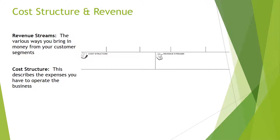At the bottom of the business model canvas you have the cost structure and revenue streams. This section highlights how you make money and the costs associated with operating the business. For a farm, revenue streams can include selling kale direct at a farmers market, selling wholesale to restaurants, having farm tours available to the public, or leasing land to nearby neighbors. Cost structure describes expenses like cost of goods sold, land, labor, utilities, marketing, and insurance — the money coming in and the money going out.